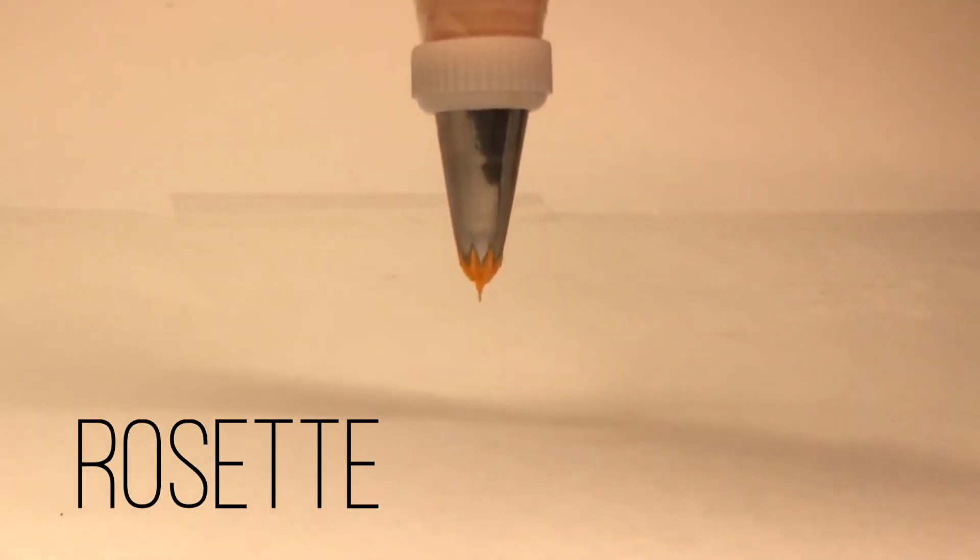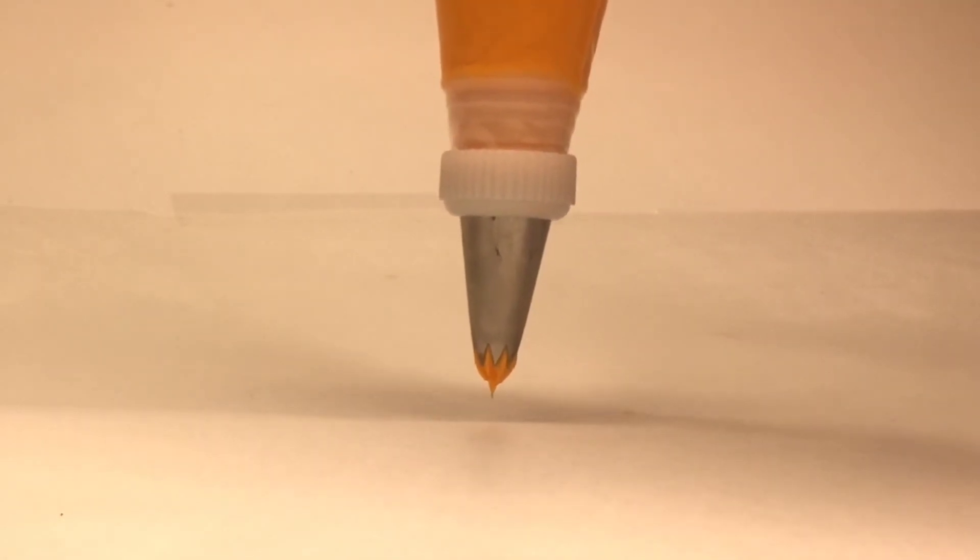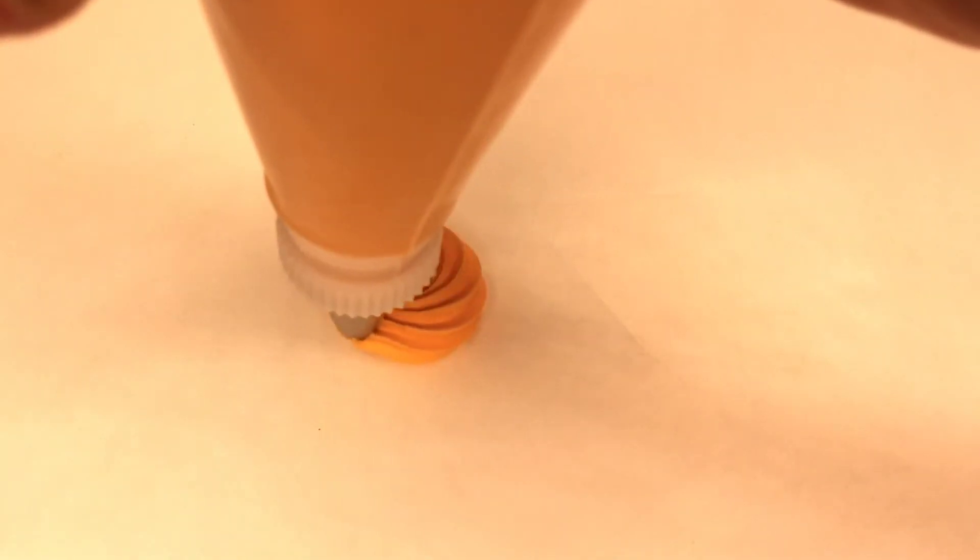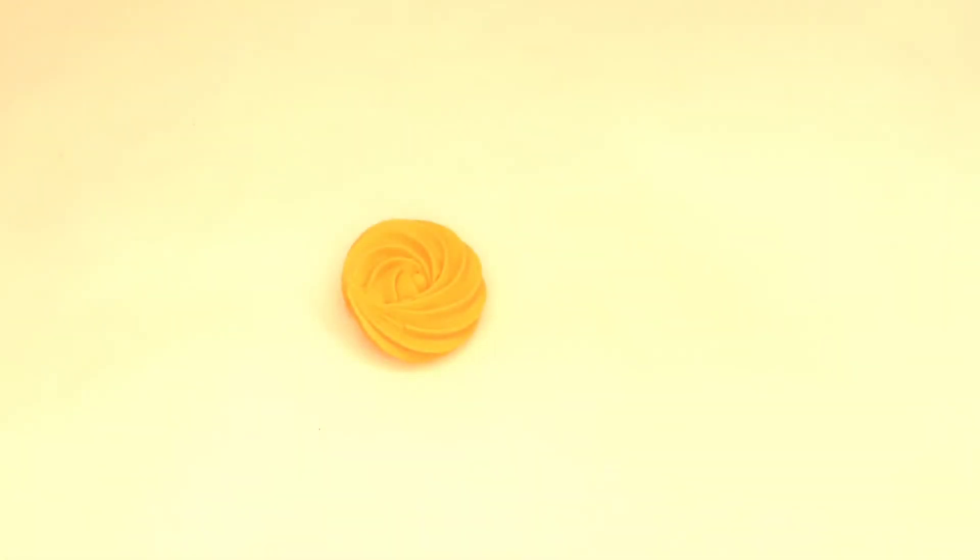Our next technique is the rosette. With this technique, we hold our tip vertically, but we hover above the surface. Now let's take a look at that technique overhead. Here we again hover above the surface. We squeeze and form a very tight loop onto itself. Relaxed pressure about seven o'clock and lift off.